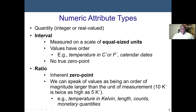Interval data: we can do arithmetic operations on it. The example is temperature — zero means something. Or a calendar date — zero means something. There is no true zero point in interval data. With ratio scale, there is an inherent true zero point. Both are numeric. In interval, zero means something; in ratio, zero means nothing.